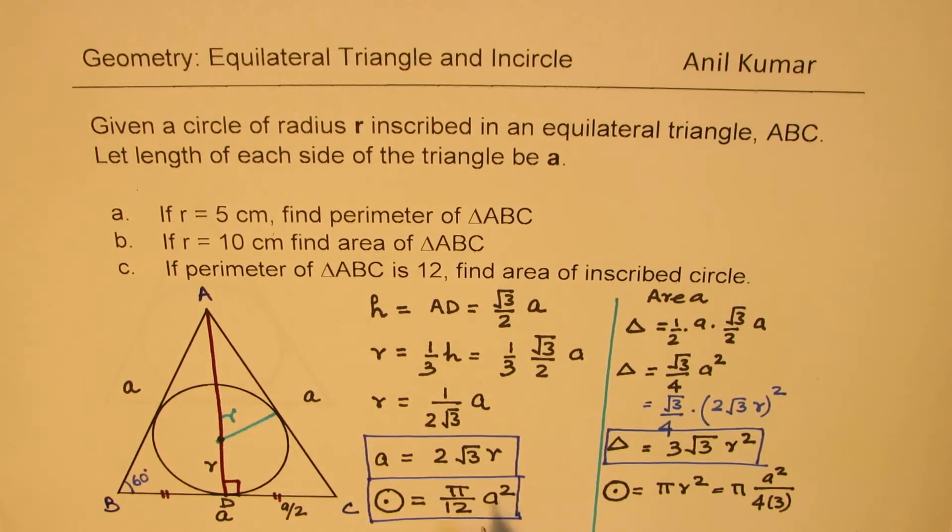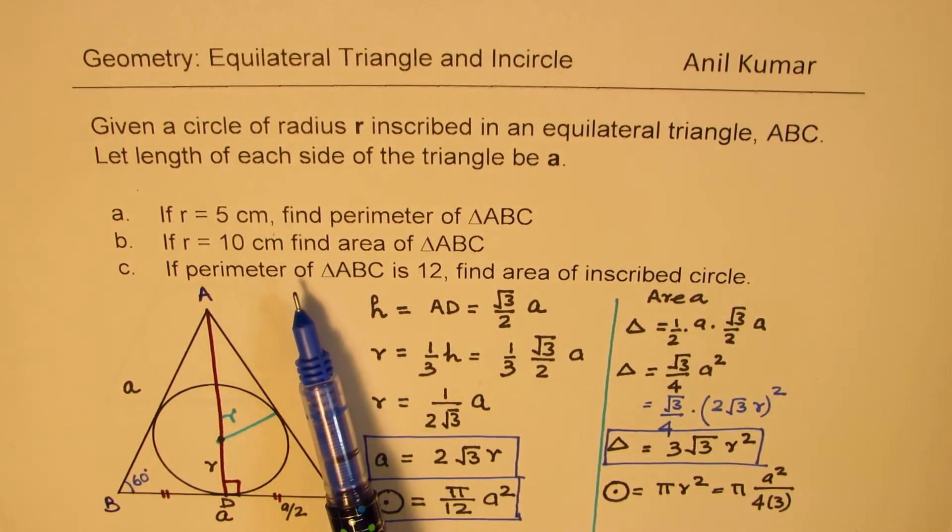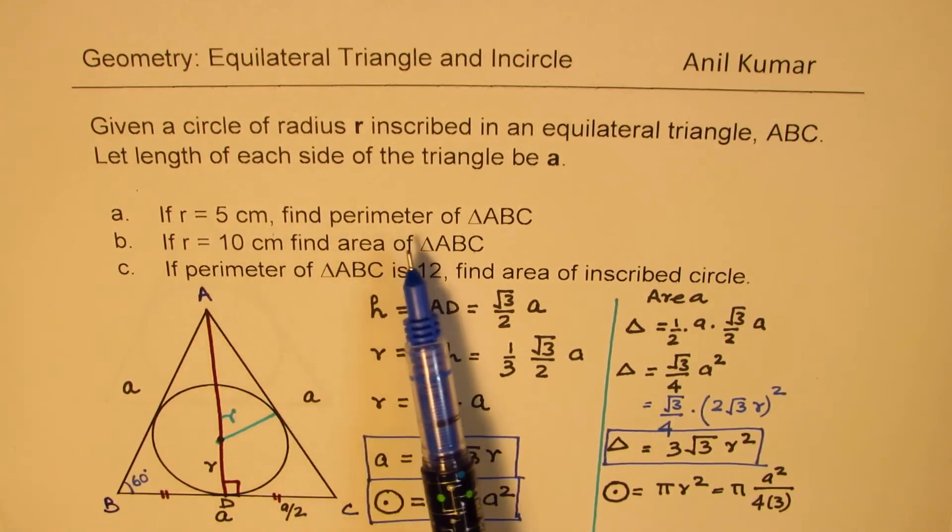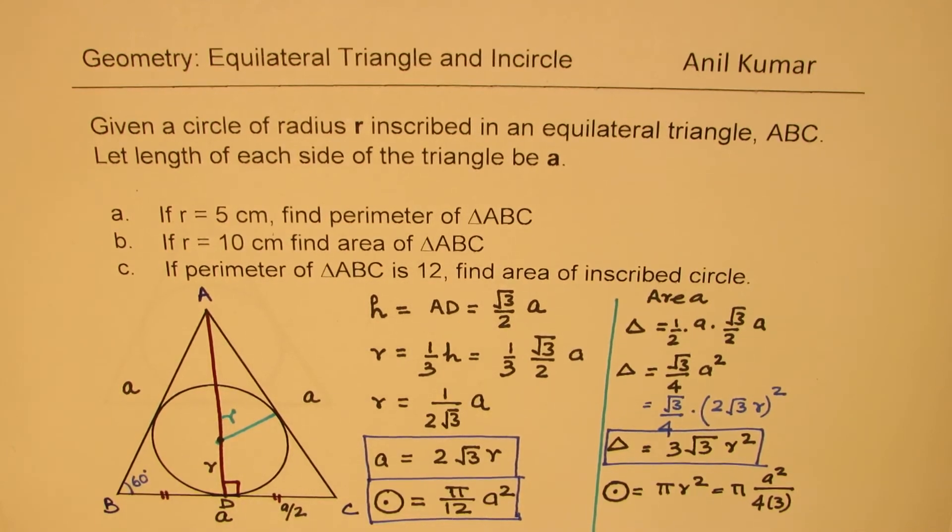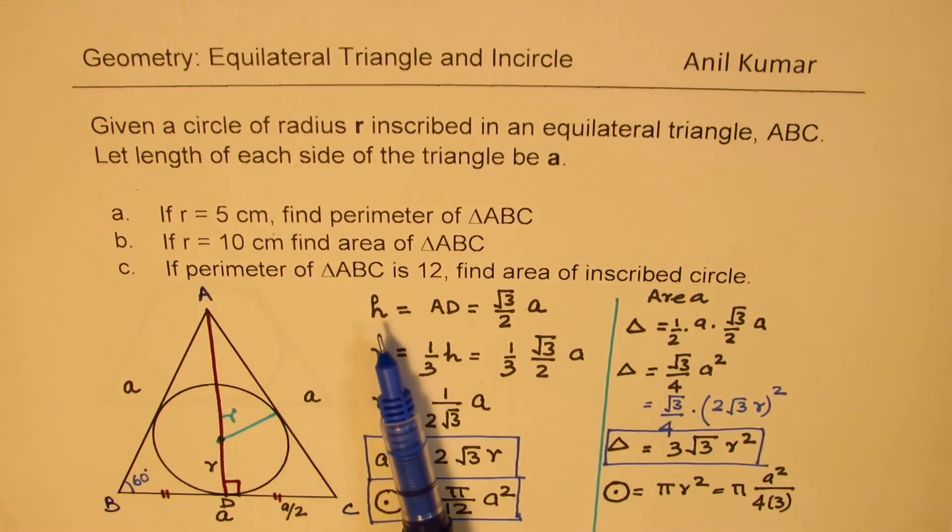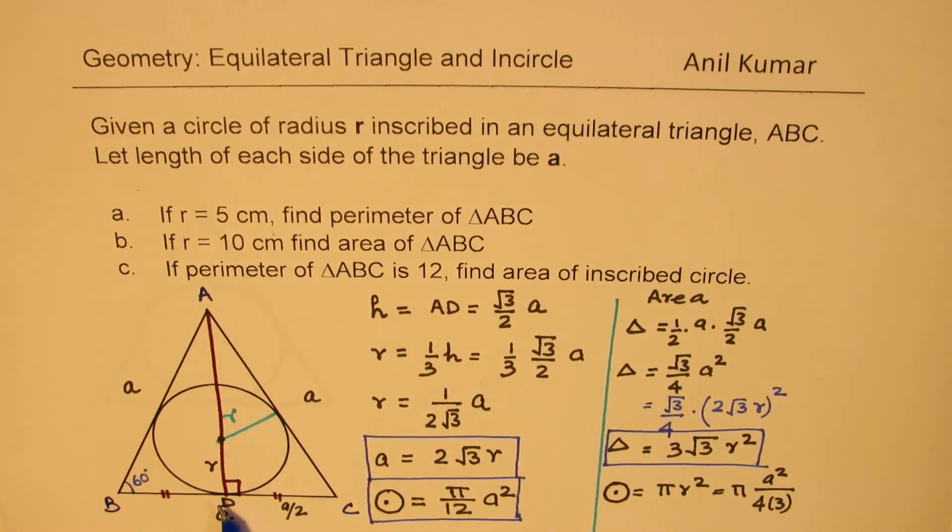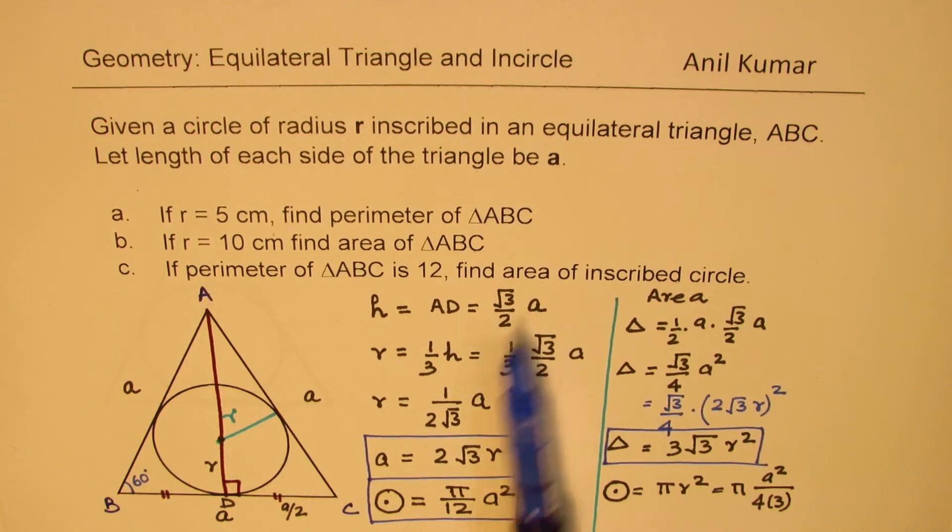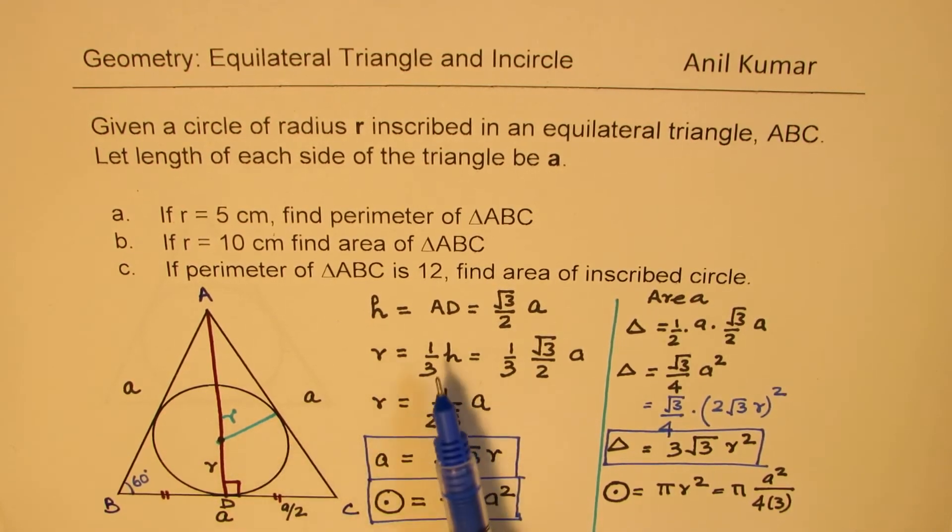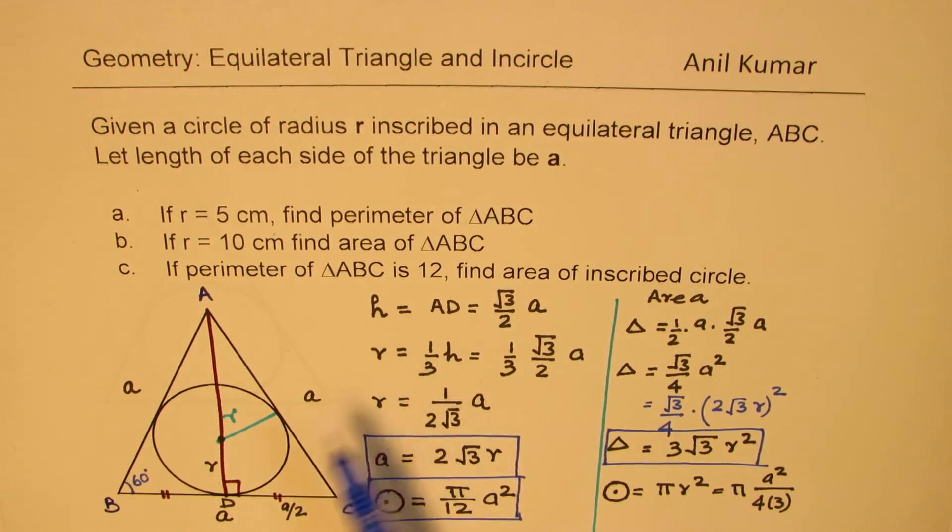If you're given a question where you need to find different values, this example helps you solve all these scenarios. I've given you all the required formulas. The height of an equilateral triangle is (√3/2) times the side length. The radius is one-third of this height, since this point is the centroid, circumcenter, and orthocenter.